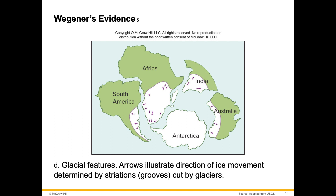Wegener's continental drift hypothesis was not widely accepted at the time because he was considered an outsider among geologists, and his use of deductive reasoning was considered very unusual for the time. He could not explain how the continents moved. Therefore people thought, since he can't explain how they moved, then of course they don't. Supporters of the contracting Earth hypothesis came up with alternative explanations for some of Wegener's observations — for example, land bridges that allowed fossil organisms to move between continents.